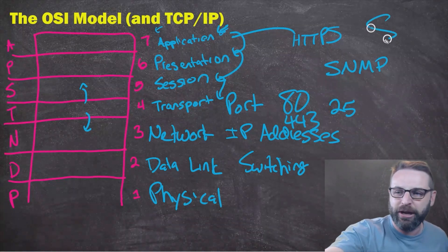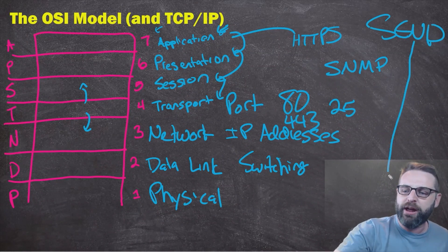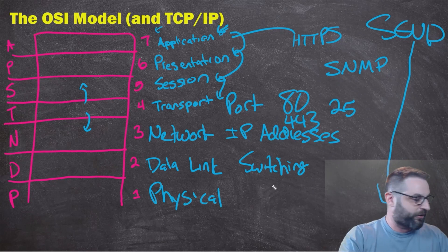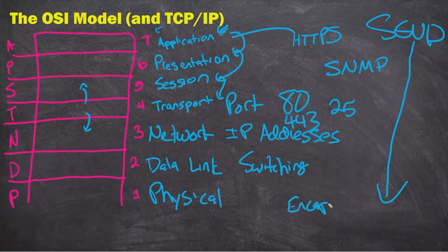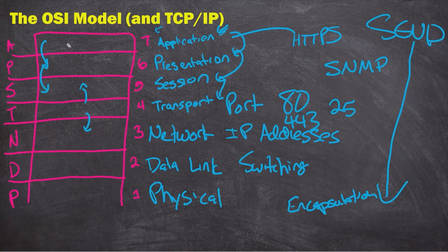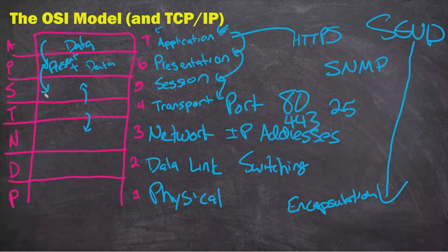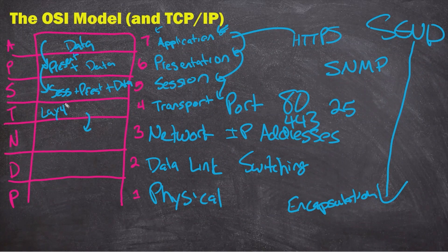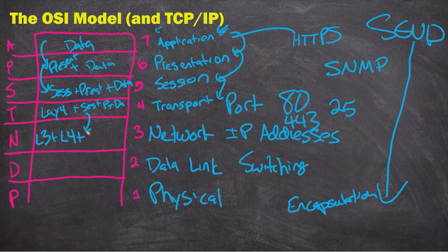When you click that Send button on your email and it goes through this process going down the OSI model, we call that encapsulation — because as we move from one layer to the next, we're adding just a little bit more data into the original data packet. We had our original payload, then presentation data, then session and presentation and data, then we added layer four information — source and destination ports — and on the outside of that, layer three information, and so on. Every single step down, we're encapsulating it in the next layer.